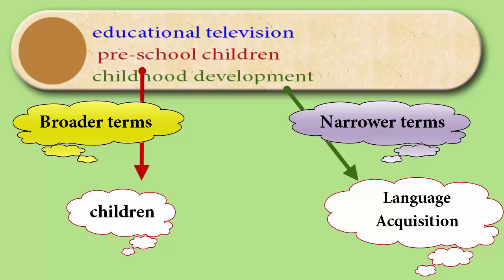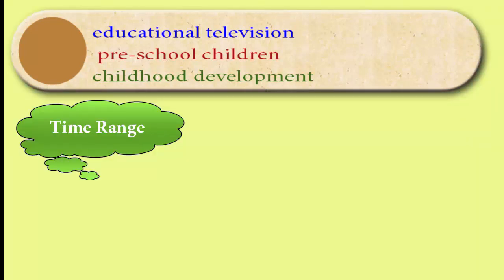I want to have those terms ready for if I start getting search results that are either way too many for me to really get a sense of the topic — in which case I will pick a narrower term — or way too few for me to base a paper on, in which case I will use one of my broader terms.